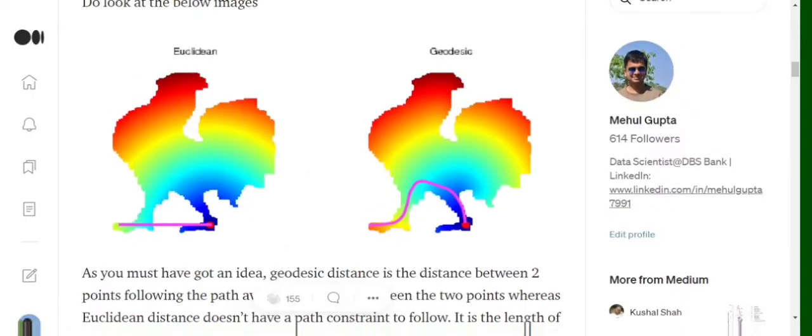A couple of crucial topics that we must know before moving ahead are geodesic distance and double centering a matrix. First, we'll move on to geodesic distance. This image calculates the distance between two points using Euclidean distance—the pink line. And in the second image, the distance between the two points is calculated using geodesic distance.